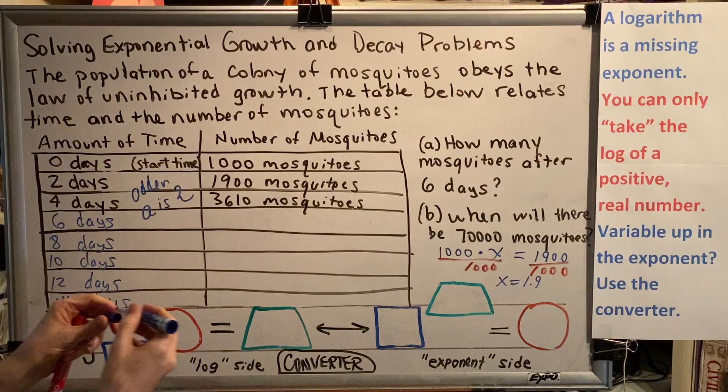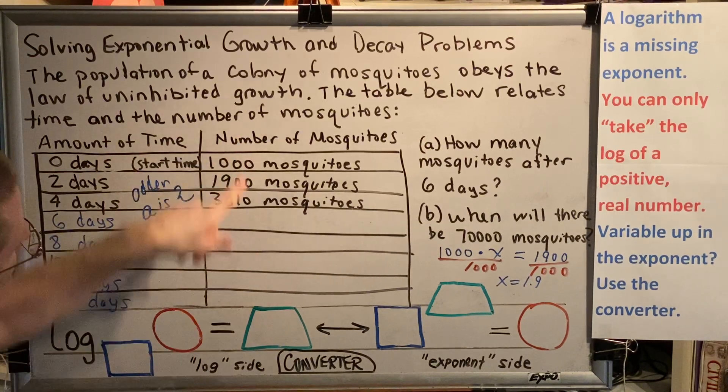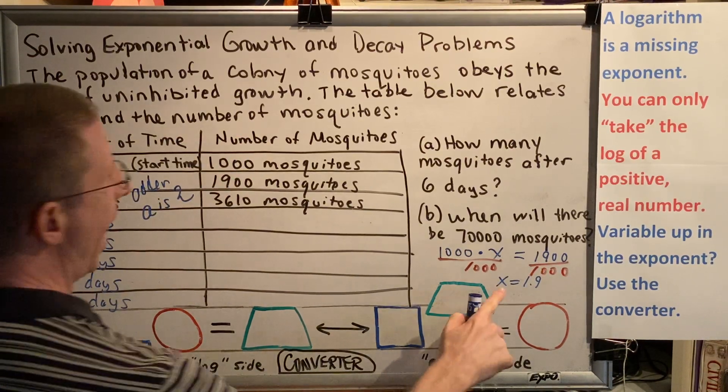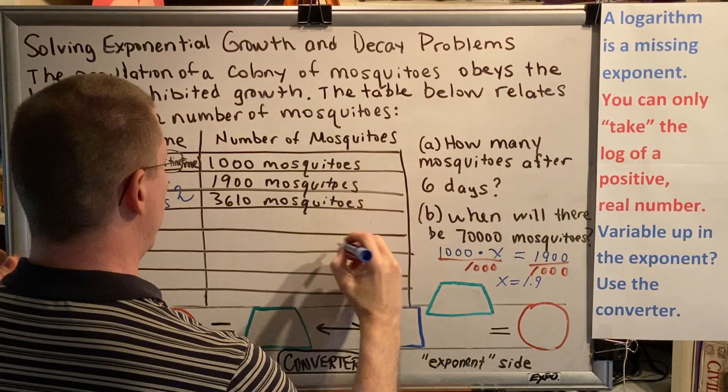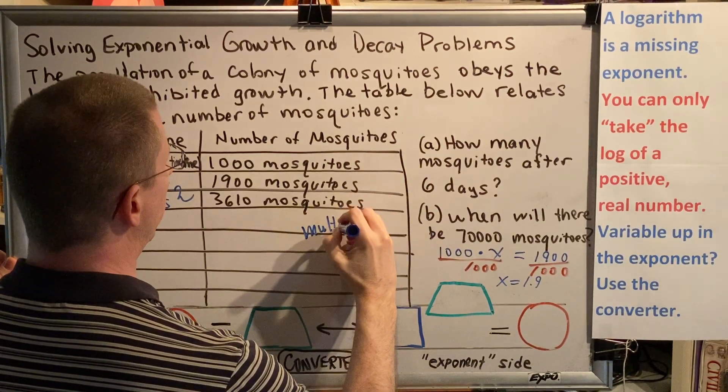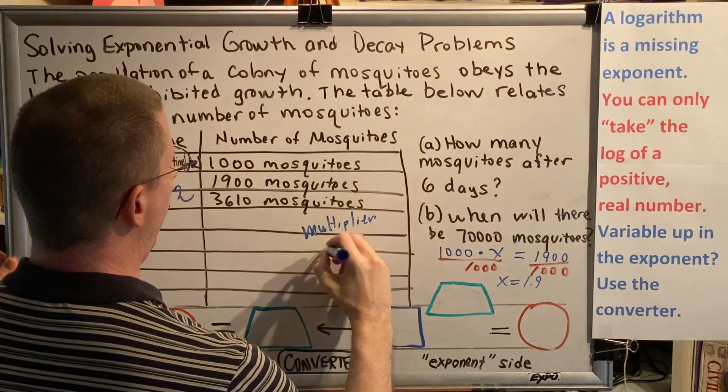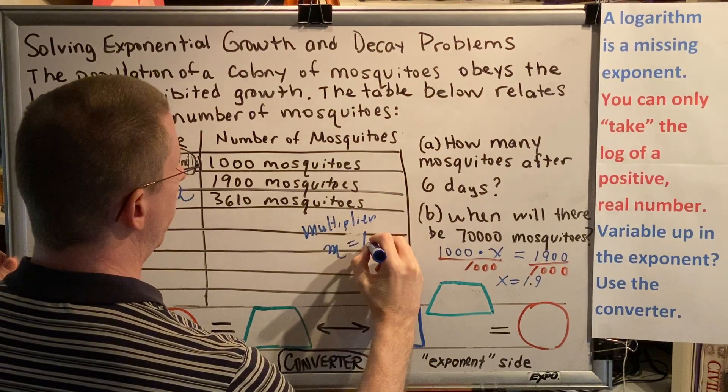Now, in this particular instance, x represents our multiplier. So instead of x, we'll use m. So the multiplier m equals 1.9.